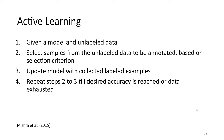For active learning, the problem formulation is straightforward. Given a model and unlabeled data, the goal is to select as few samples as possible to annotate based on various selection criteria, and to quickly reach the performance which we would have reached by using the full training dataset.